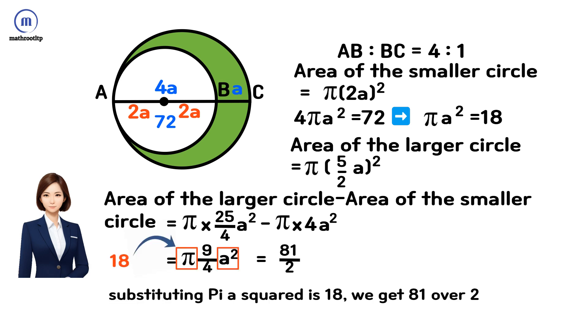Substituting πa² = 18, we get 81/2. Therefore, the area of the shaded region is 81/2.